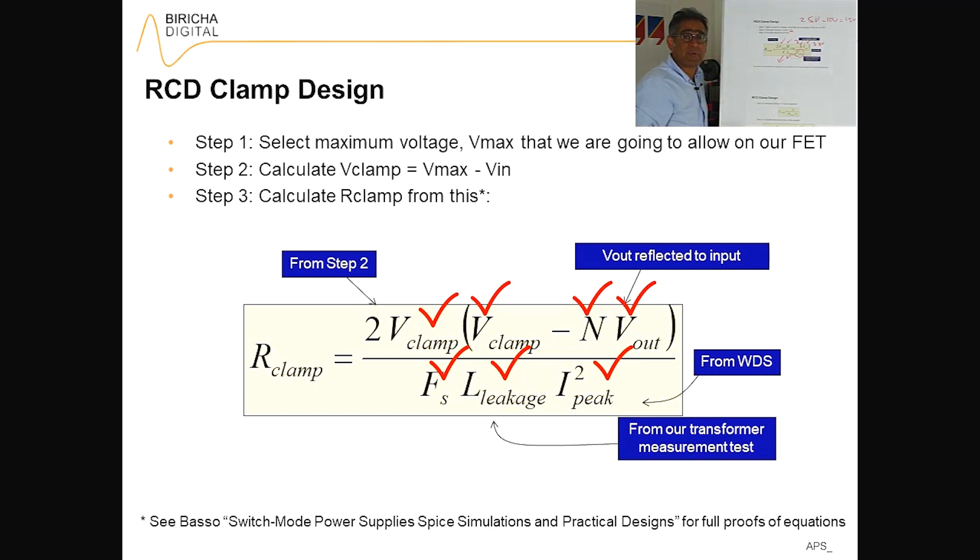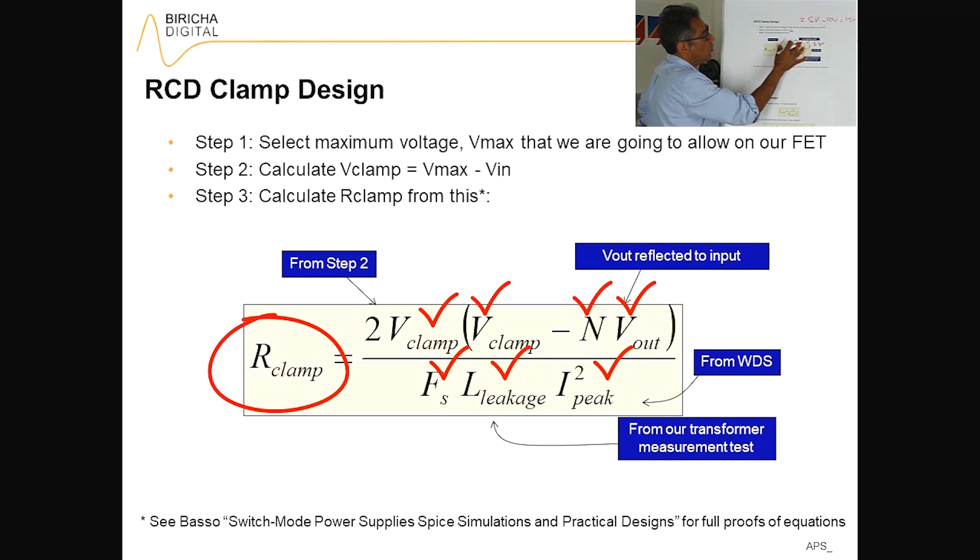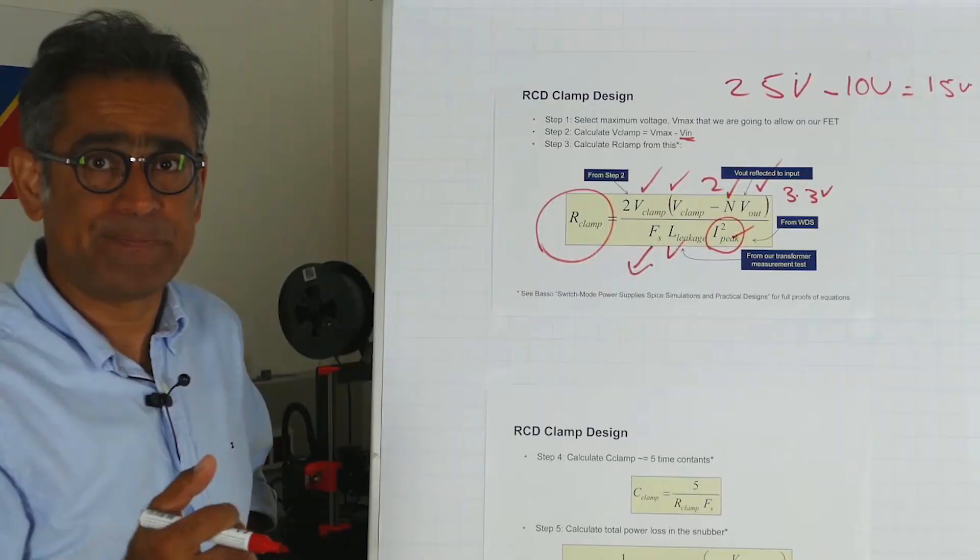We also have a power supply design software called Breacher WDS, which when you use that to design, it will give you the peak value. So you can see that you have got all the unknowns, and therefore you can calculate the value of R clamp.